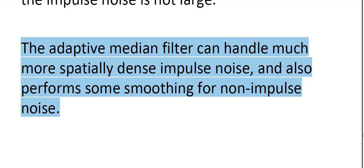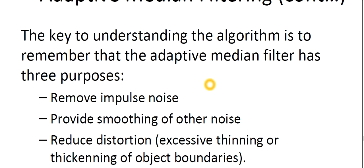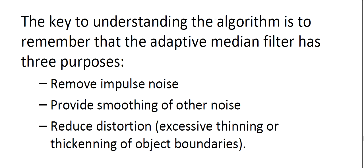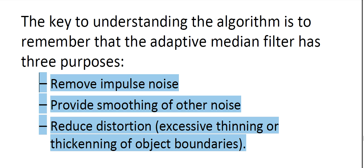First question: give some examples of non-impulse noise. Now, the adaptive median filter has mainly three purposes. Please write these down. First, it removes impulse noise. Second, it provides smoothing of other noise as well. Third, it reduces distortion — excessive thinning or thickening of object boundaries.